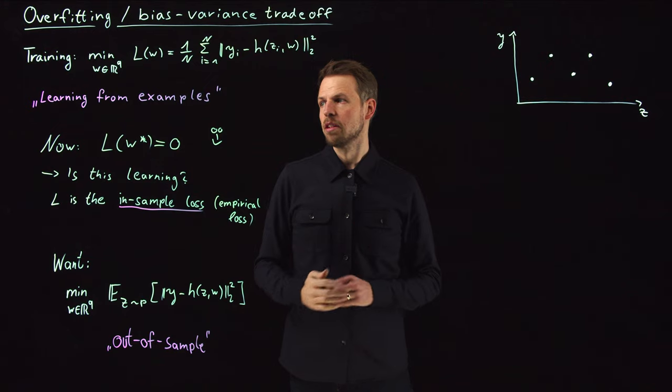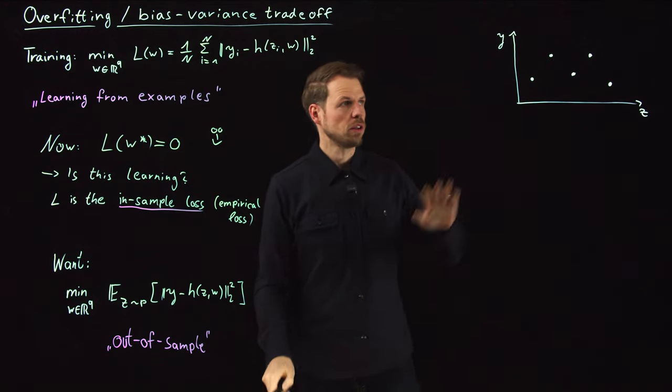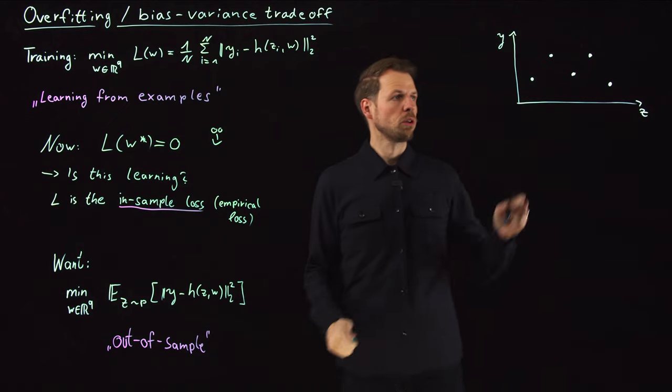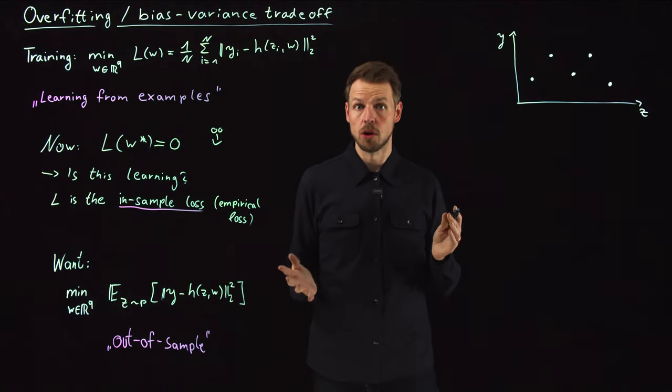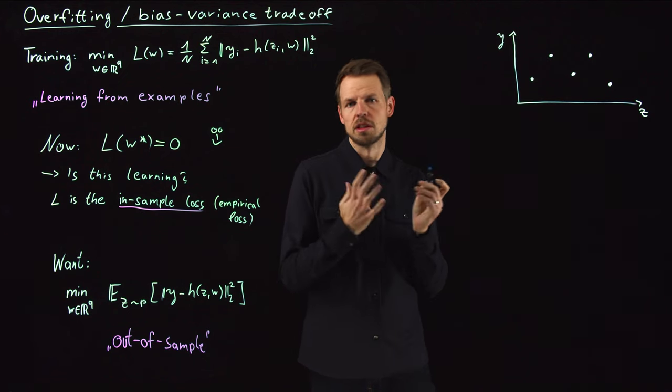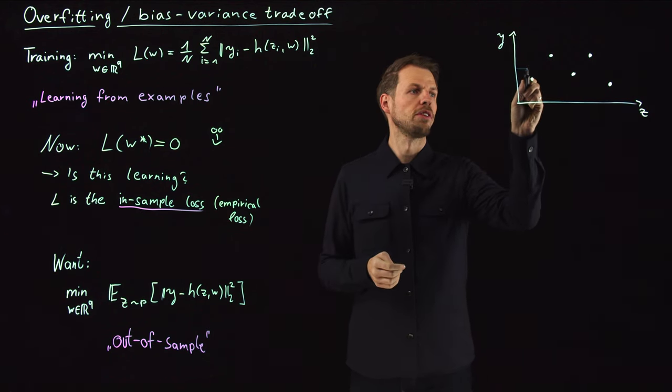So the overall error is composed of two things. Before we continue, let's consider this very simple example. You have these five points, and you want to fit a model. Now the question is, which type of model do you want to fit? One choice could be, let's fit a constant function. So maybe you would take the mean, which would minimize this loss function.